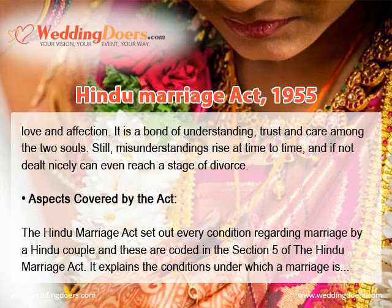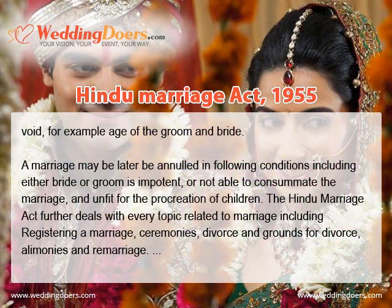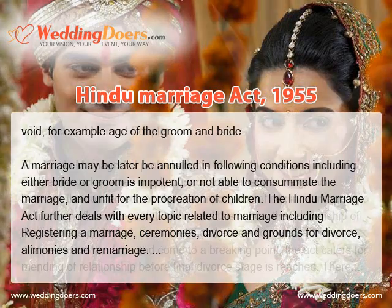The Hindu Marriage Act sets out every condition regarding marriage by a Hindu couple, coded in Section 5 of the Act. It explains the conditions under which a marriage is void, for example the age of the groom and bride. A marriage may later be annulled if the bride or groom is impotent or unable to consummate the marriage and unfit for the procreation of children. The Act further deals with registering a marriage, ceremonies, divorce and grounds for divorce, and remarriage.